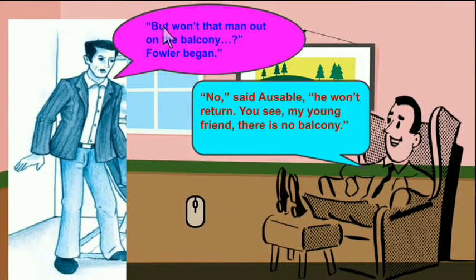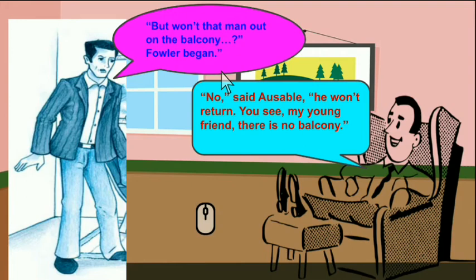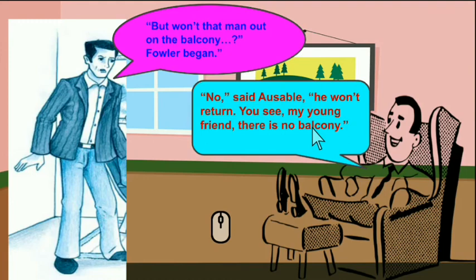Fowler continued, confused — 'But won't that man out on the balcony...?' 'No,' said Ozobal, 'he won't return. You see, my young friend, there is no balcony.' Ozobal replied that Max would never come back — because there was no balcony, and Max had fallen to the ground from the top floor of the building.